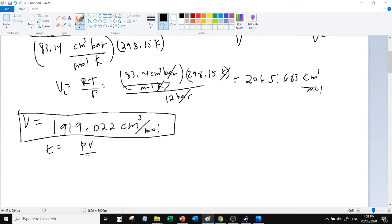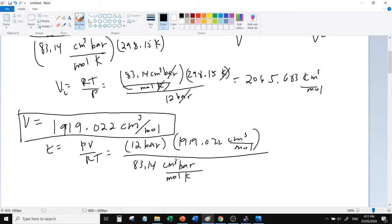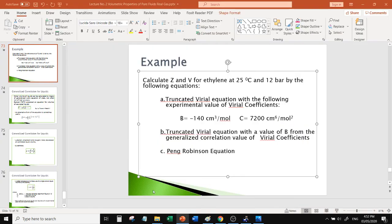Then if you solve for Z which is PV over RT, just substitute. Z is unitless. The Z you'll get is 0.929. Okay, so that's letter A.